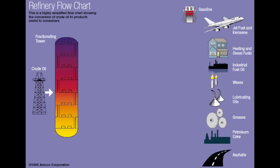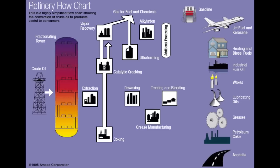That fractionating tower is called the distillation column, which separates the crude oil into various boiling fractions. These fractions are fed to the downstream processes, which include the vapor recovery unit, ultraforming, alkylation, catalytic cracking, extraction, coking, and de-waxing.